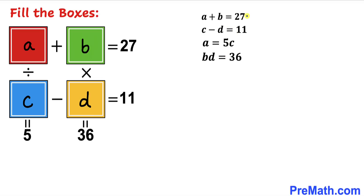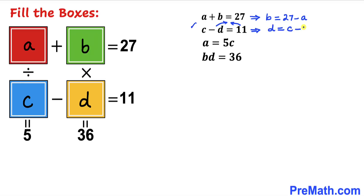Let's manipulate the first equation by moving A to the other side, giving us B equals 27 minus A. Then manipulating the second equation by moving D and 11 to opposite sides, giving us D equals C minus 11.